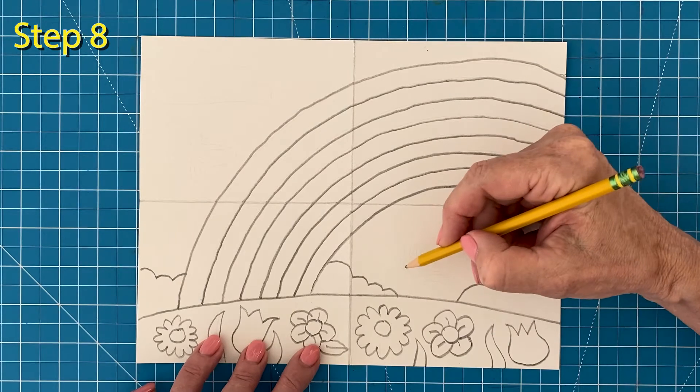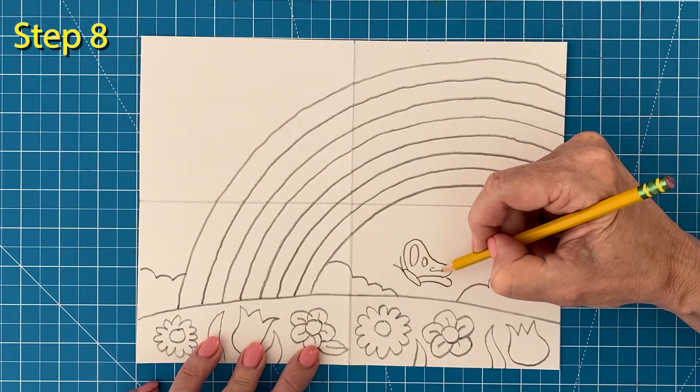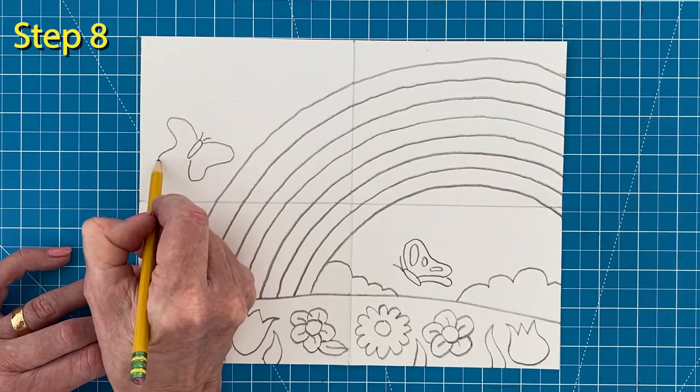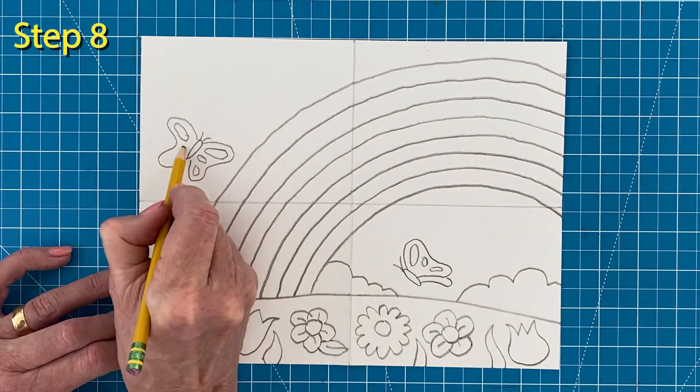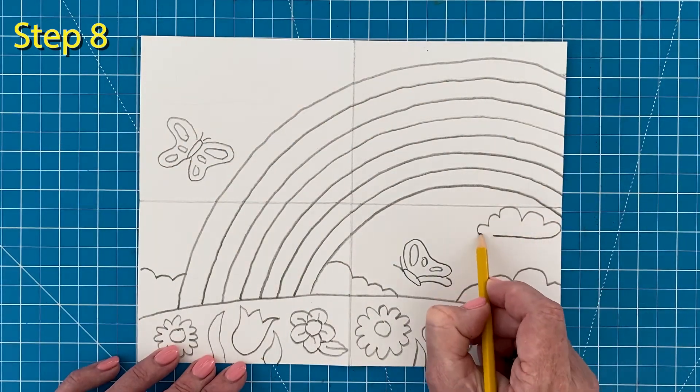Step number eight, here's a fun and easy way to draw the side view of a butterfly. And finally, a couple of clouds will really brighten up the sky.